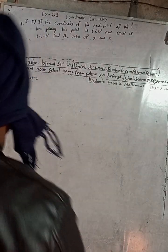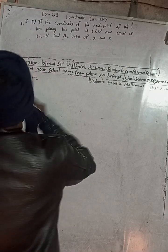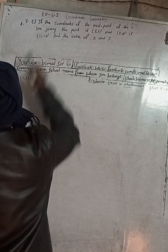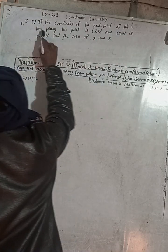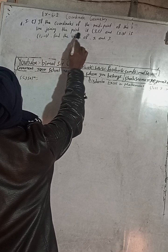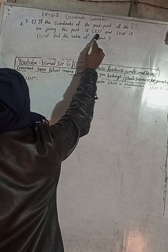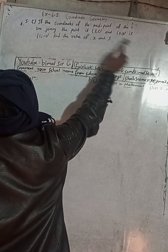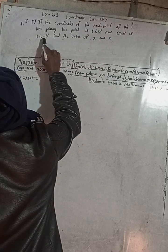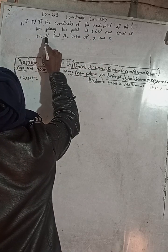This is question number 5c, Exercise 6.2, Coordinate Geometry, Class 9. The question is: if the coordinates of the midpoint of the line joining the points 3 comma 5 and x comma y is 1 comma minus 1, find the value of x and y.